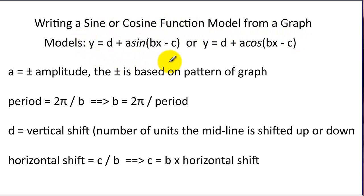When we write our model, it'll look like this for our sine function and this for our cosine function. We have to figure out the values of four of these parameters: a, b, c, and d.